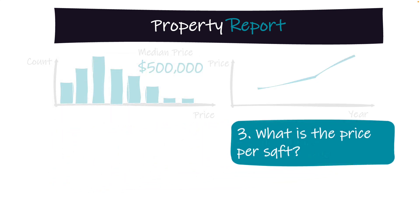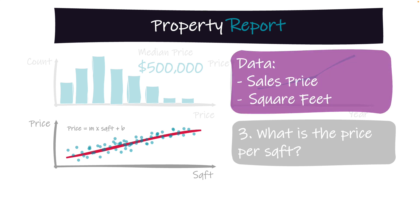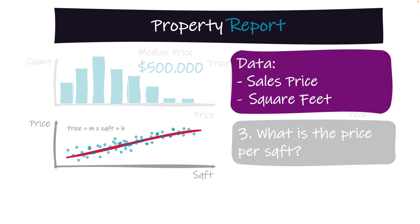The third question is: what is the price per square footage? Here, we propose to create a linear regression model where we're plotting the square footage as a function of the price, and we can fit this to a straight line where the slope is going to be a first approximation of the price per square footage. For now, let's assume that the client is happy with this approach. For this, we will require the sales price and the square footage of every property.